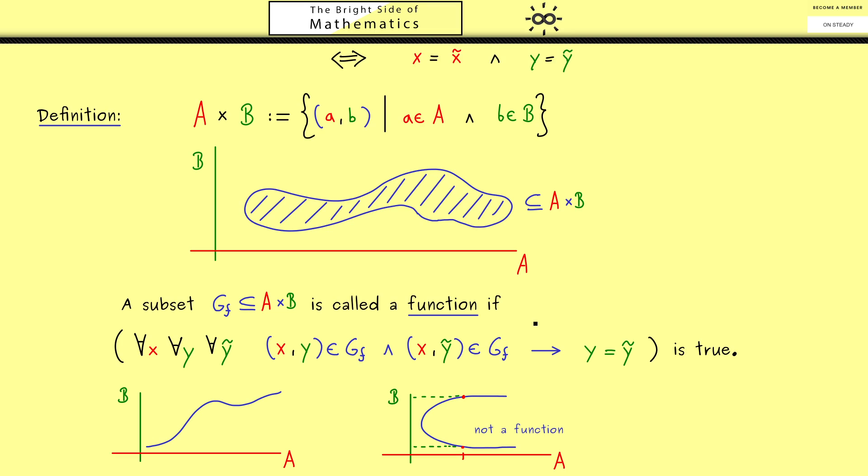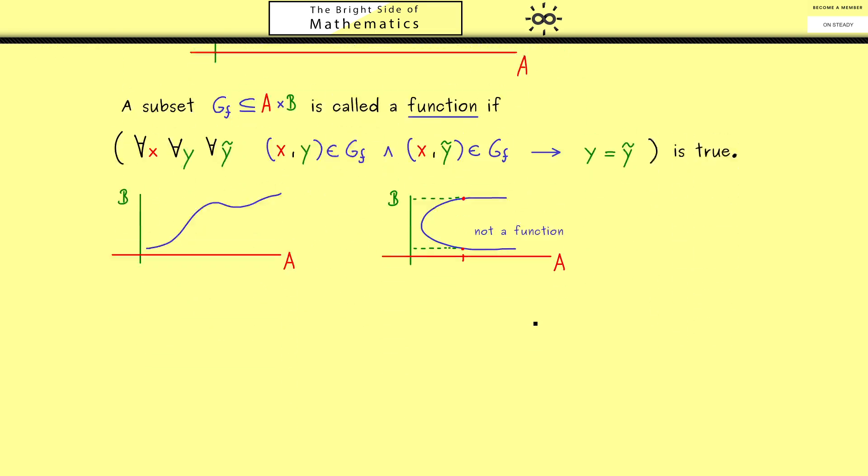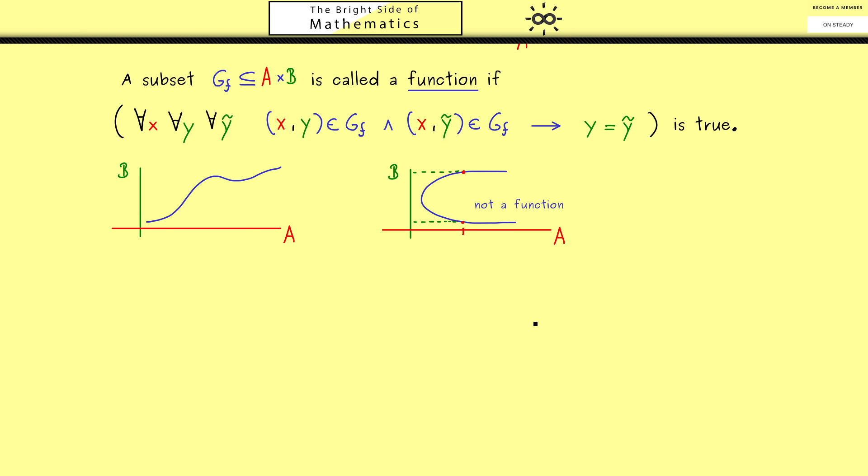Of course we will now introduce a better notation, because such functions will be so important for all mathematics we will do later. However, for this we also need that each x on the x-axis here gets exactly one y. Or by using short formulas, this reads as: for all x in A there exists a y in B such that the pair (x, y) lies in our subset.